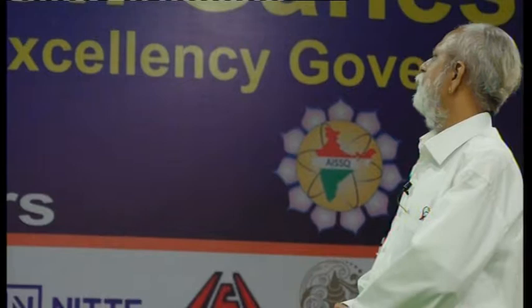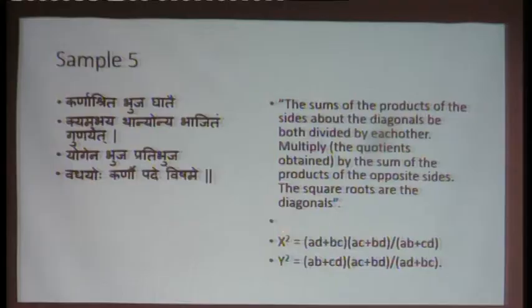Sample 5 is taken from Brahmagupta's Brahma Sphuta Siddhanta. It gives a formula for the diagonals of a cyclic quadrilateral if the four sides A, B, C, D are known. One diagonal will be the square root of (AD + BC)(AC + BD) divided by (AB + CD). The other diagonal will be the square root of a similar expression with small changes.